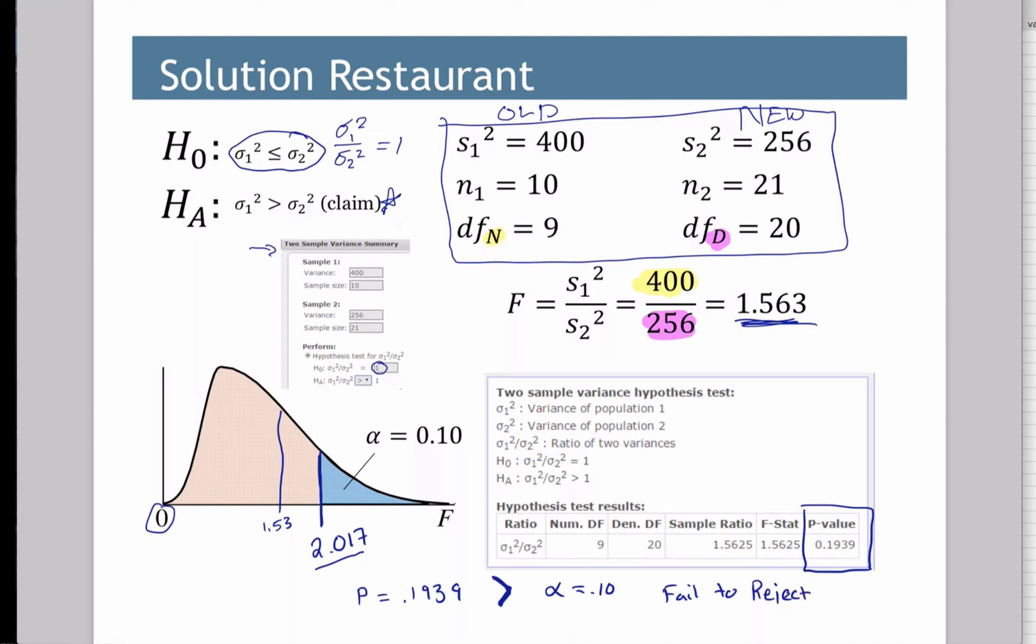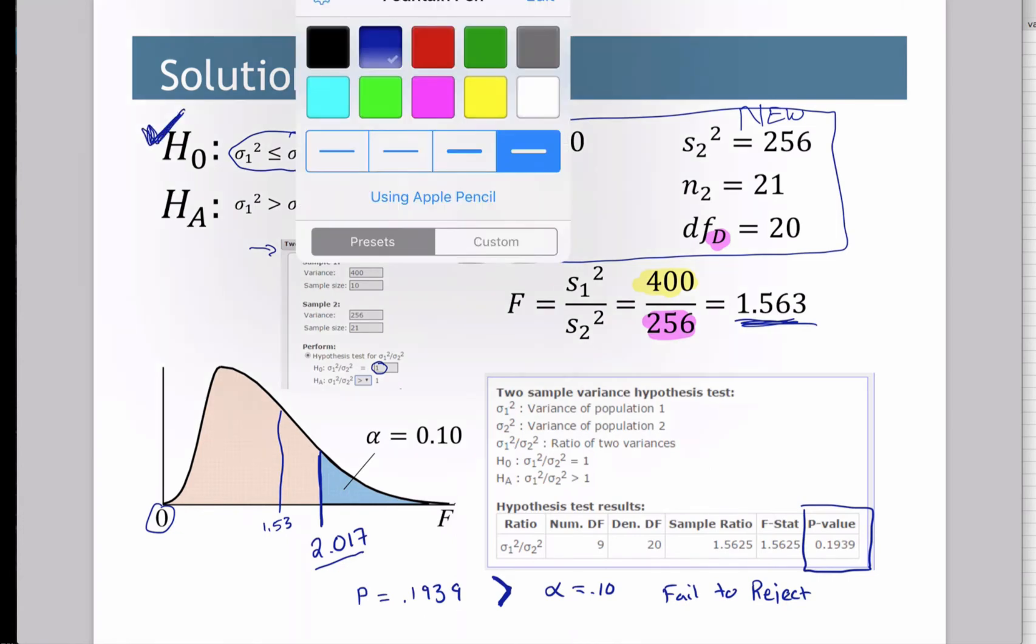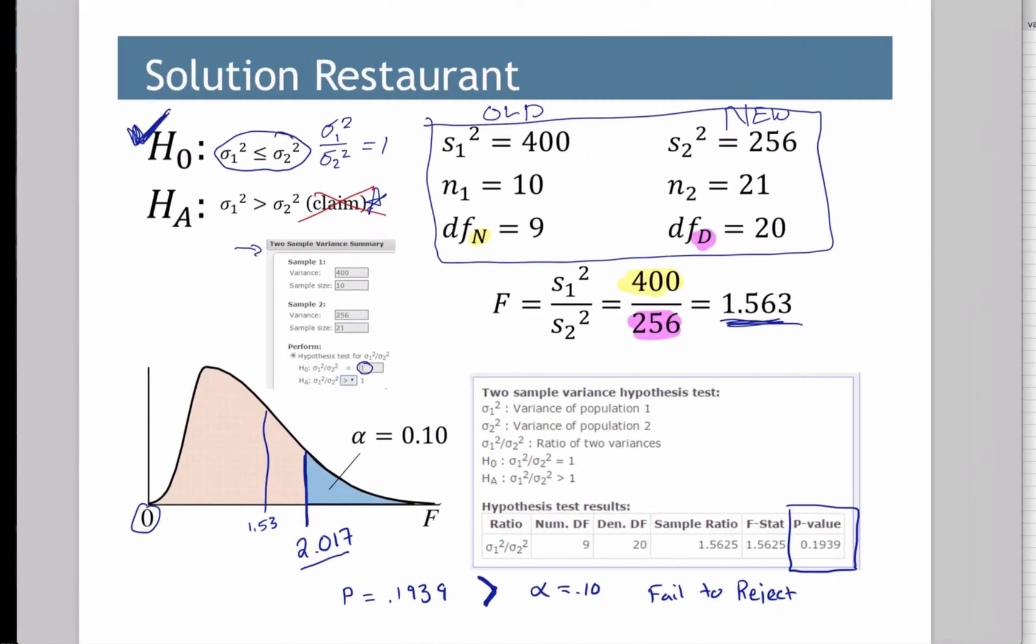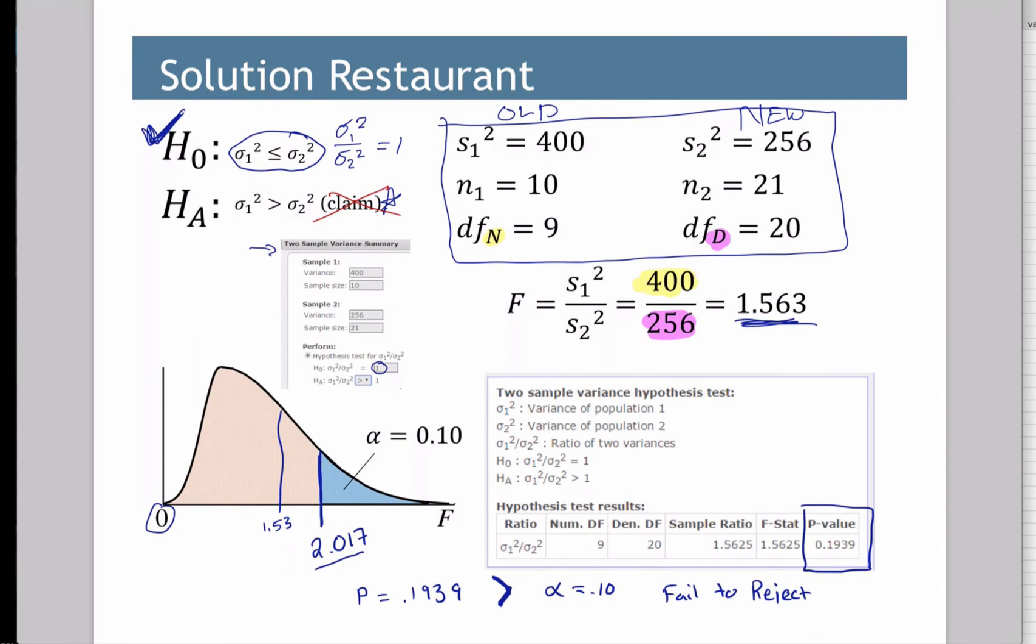And if I fail to reject the null, I think the null is okay. If I think the null is okay, it looks like I'm not going to support the claim. So there is not sufficient evidence to support the claim that the variance for the new system is less than the old system. So in other words, what are we going to decide here? We're going to decide not to switch to the new system.